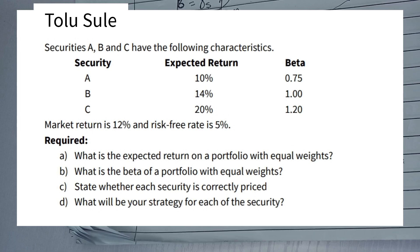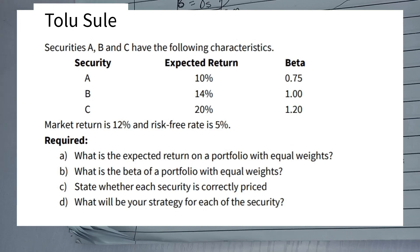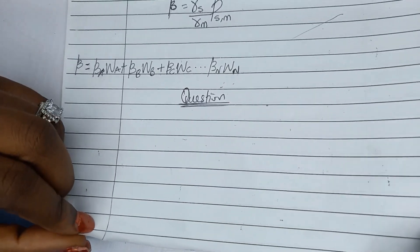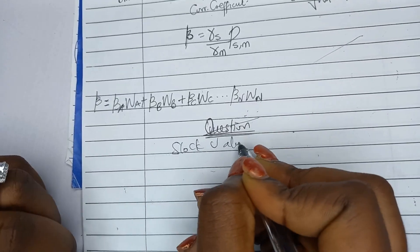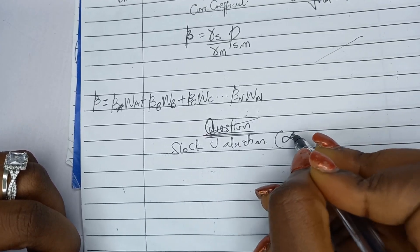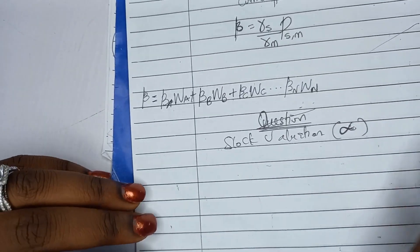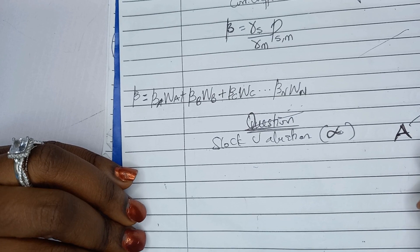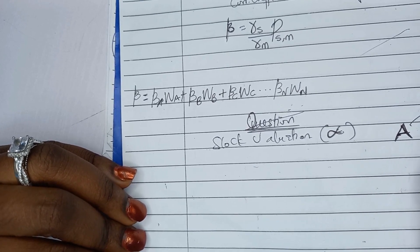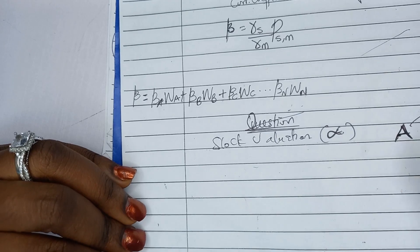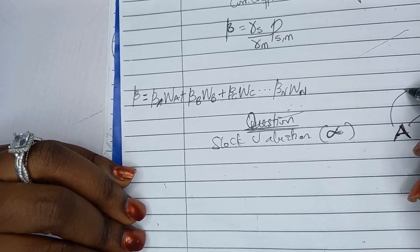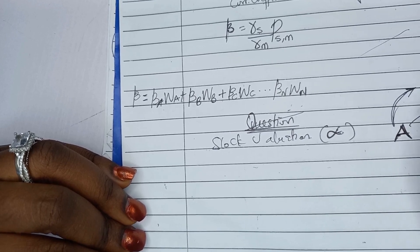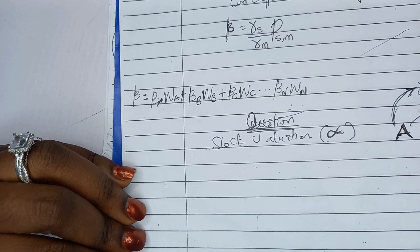Before solving this question, let's quickly cover stock valuation in portfolio theory — to know whether a portfolio is correctly priced or not. Stock valuation is measured by alpha. For a particular stock, there is a return the investor expects, called the stock return, but the market also predicts a return. To get the alpha value, you compare the stock return and the market return.